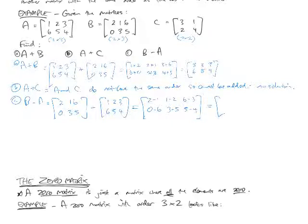So the result is going to be something with the same order as the things being added together, or subtracted together. This is going to be 2 take 1 is 1, 1 take 2 is negative 1, 6 take 3 is 3, 0 take 6 is negative 6, 3 take 5 is negative 2, 5 take 4 is 1. So that is the solution to B take A.